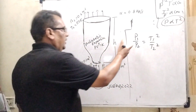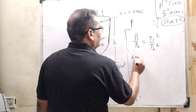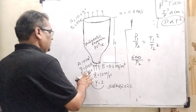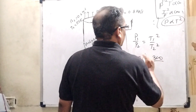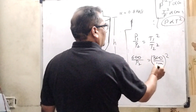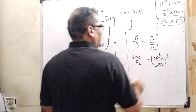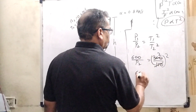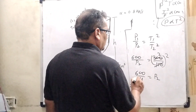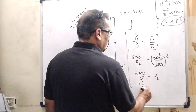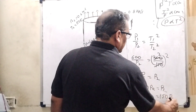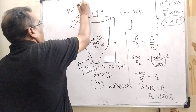Substituting the given values: P1 is 600 Pascal, T1 is 300 Kelvin, and T2 is 150 Kelvin. So 600/P2 equals 300 squared upon 150 squared, which equals 4. Therefore P2 equals 600/4, giving us P2 equal to 150 Pascal.